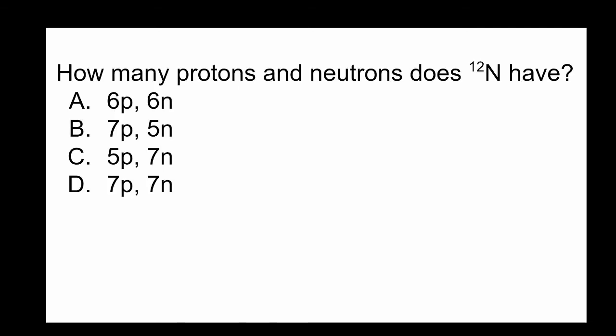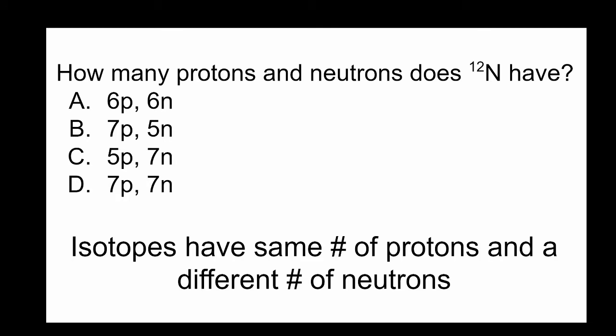Okay, one last review question. How many protons and neutrons does nitrogen-12 have? The answer here is B. All nitrogen have 7 protons, so 12 minus 7 would give us 5 neutrons. Remember, isotopes have the same number of protons and a different number of neutrons.